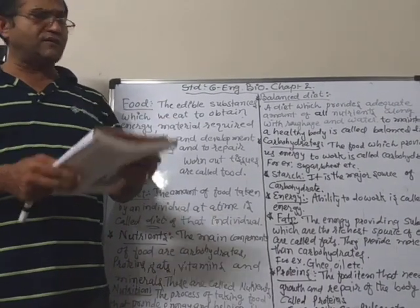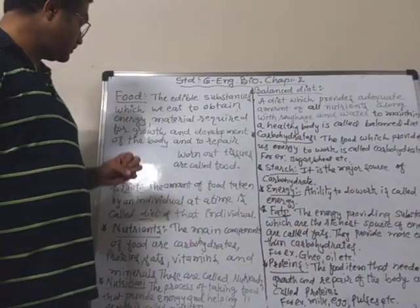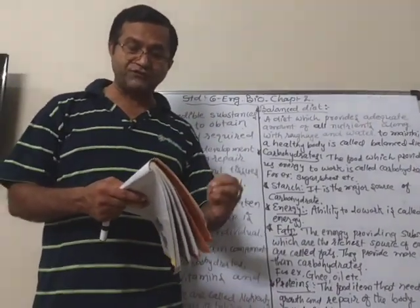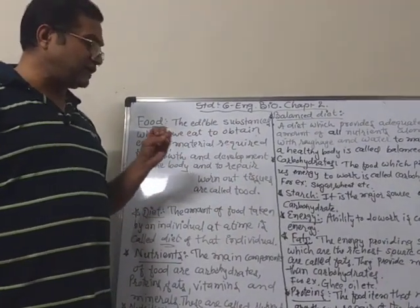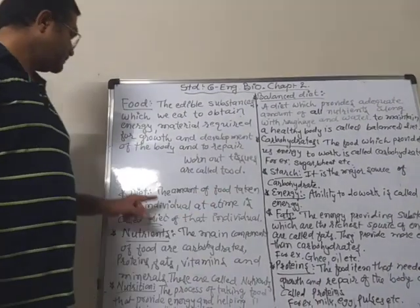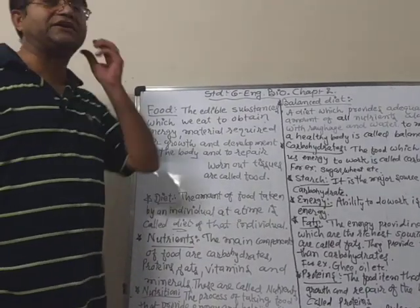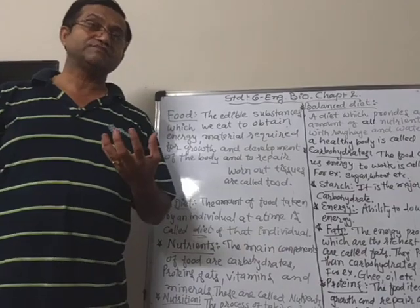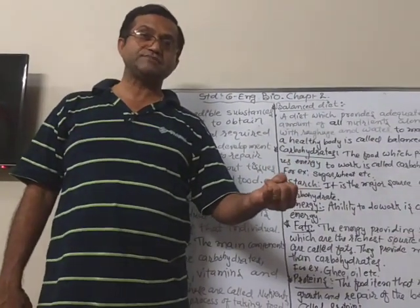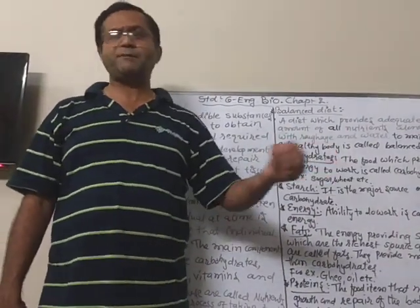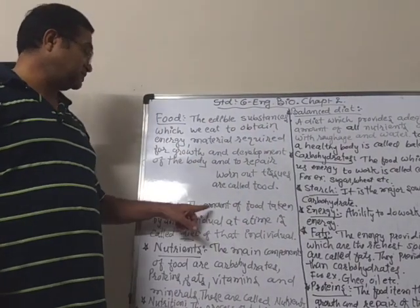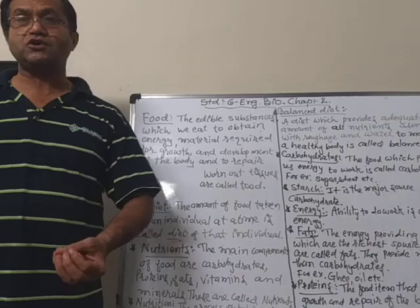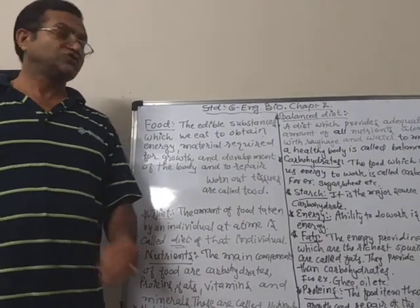So why do we eat different types of foods? Why don't we eat the same type of food? That is what we will learn — what do different food items contain? Whatever we eat daily is called the diet. The amount of food taken by an individual at a time is called the diet of that individual — for example, what we eat at lunch: roti, sabji, rice, dal, and sometimes papad or pickles.